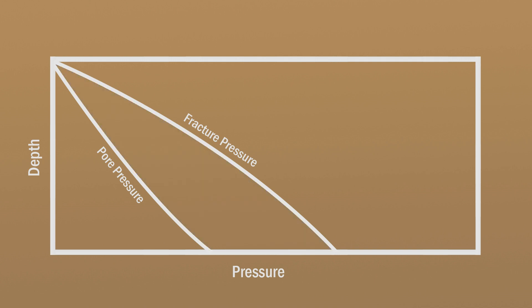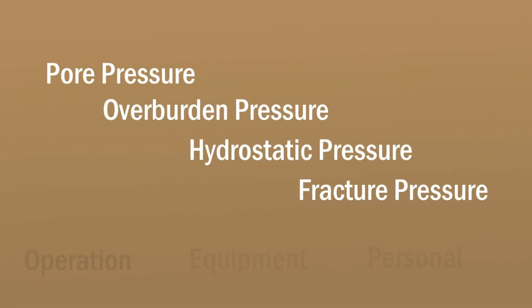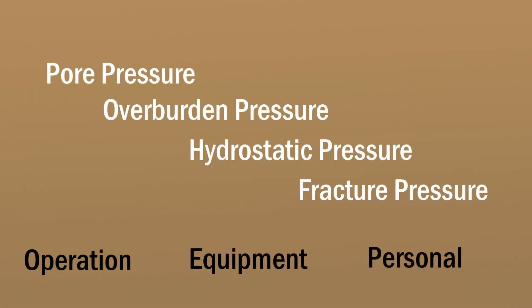Geomechanics adds another factor to the mud window called collapse pressure — the minimum pressure needed by the drilling fluid to support the borehole walls from collapsing. If this factor is taken into account, it must be compared with the pore pressure value, and the higher of the two represents the minimum boundary of the mud window. To drill down to a specific downhole target, a precise understanding of pressures and gradients is essential to ensure the safety of operations, equipment, and personnel.